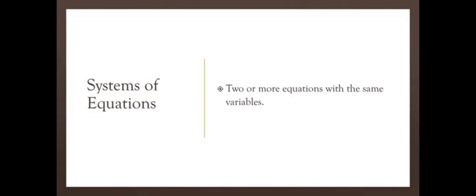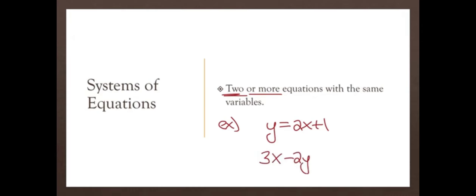So what are systems of equations? That's just two or more equations with the same variables. For example, you could have something like y equals 2x plus 1, which is an equation of a line in slope-intercept form. You could also have another equation like 3x minus 2y equals negative 2, which is in standard form. Notice that these both have an x and a y — so two equations with the same variables.